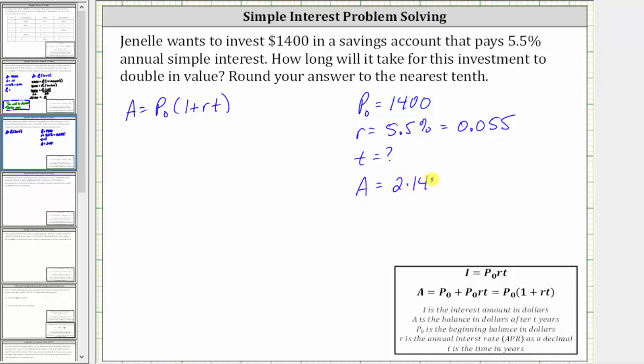Two times 1,400 is equal to 2,800. And now let's perform substitution into the equation. We substitute 2,800 for A. We substitute 1,400 for P sub zero.